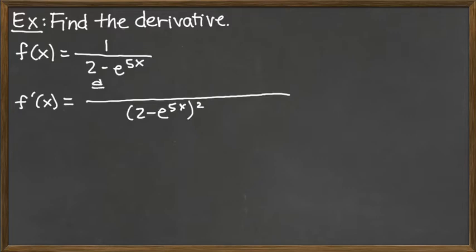So now the top, we take the derivative of the top, so d/dx of 1 times the bottom, which is 2 minus e to the 5X, and then we subtract the top, which is 1 times the derivative of the bottom, d/dx of 2 minus e to the 5X.